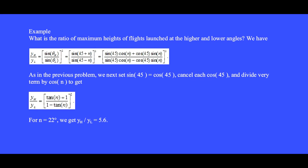But the high launch angle can be written as 45 plus n and the low launch angle can be written as 45 minus n. And then we use the trig identity to obtain this equation. But the sine of 45 and the cosine of 45 are the same number, so these are all cancelled. Next, to form a tan theta, we divide every term by cosine n.